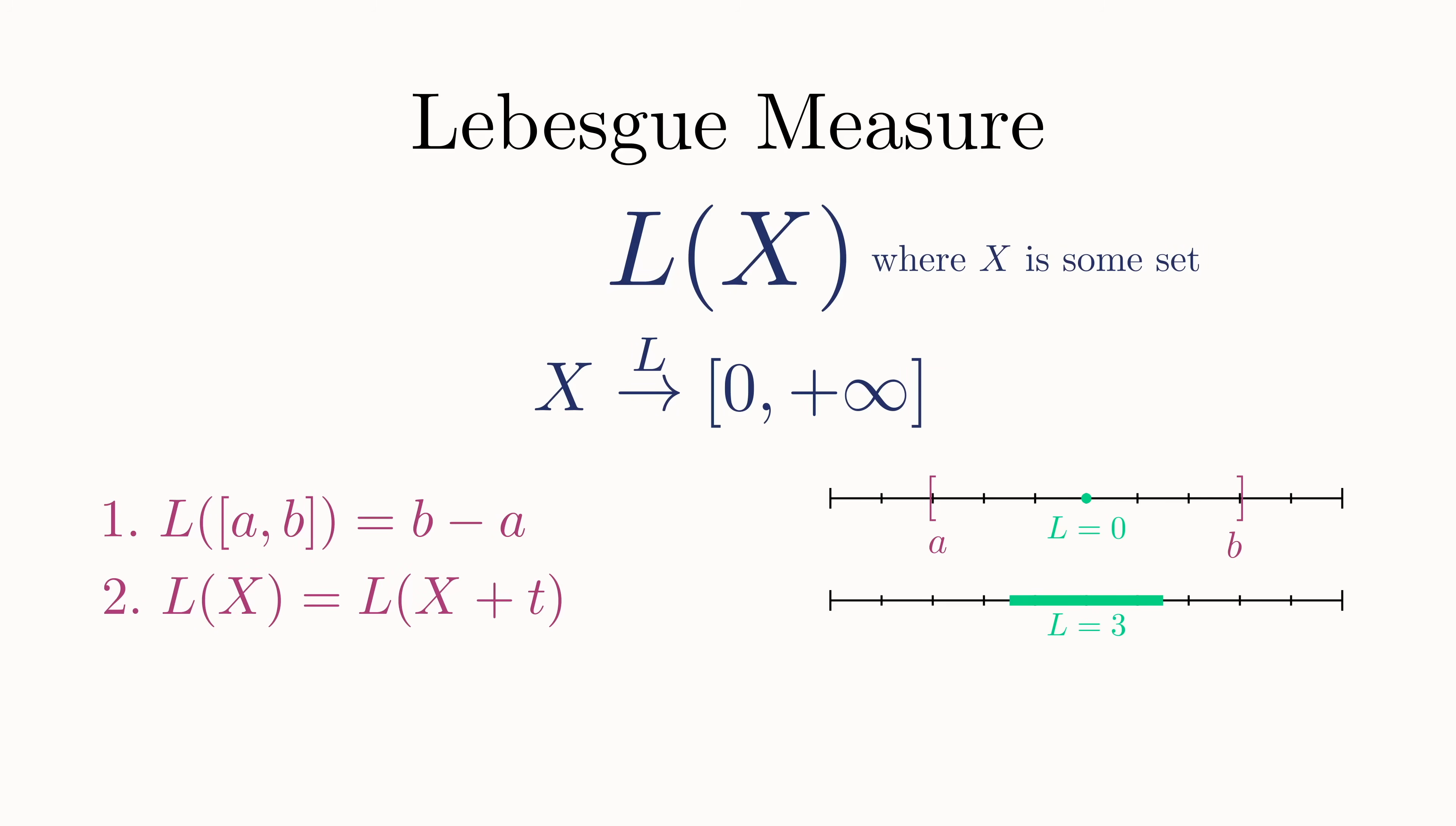Finally, if we take two sets that are entirely disjoint, so they have no points in common, then the size of both sets is just the sum of each of their sizes. And this is true for any number of disjoint sets, even a countably infinite number of them. The technical term for this is countable additivity.